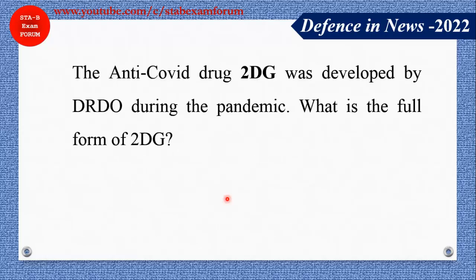The anti-COVID drug 2-DG was developed by DRDO during the pandemic. What is the full form of 2-DG? The answer is 2-Deoxy-D-Glucose.